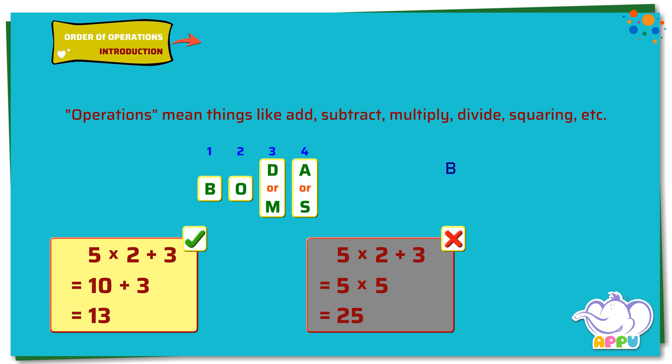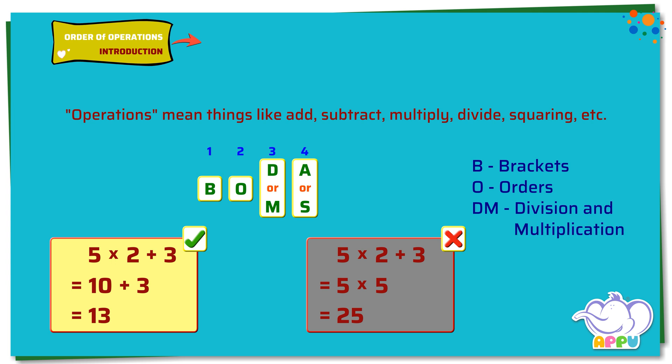B — Brackets first. Do everything inside the brackets first. O — Orders. That is powers and square roots. If you don't know what these are, don't worry about them for now. D, M — Division and multiplication rank equally, left to right. A, S — Addition and subtraction rank equally, left to right.